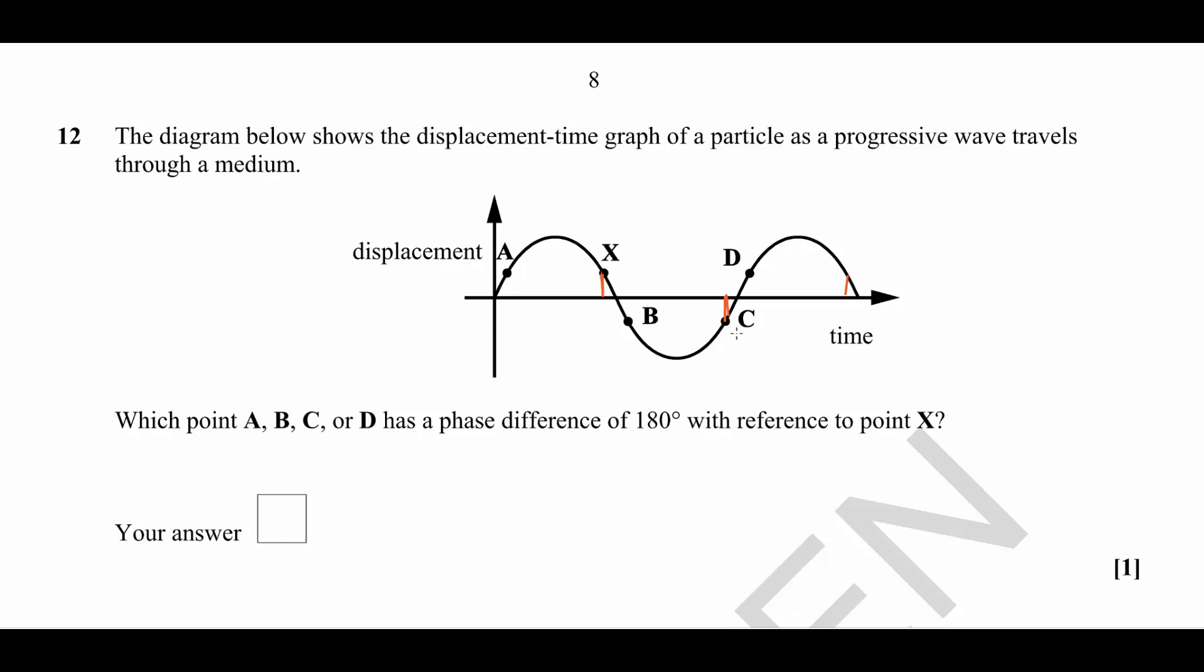Which means that C is a particle with a phase difference of 180 degrees.